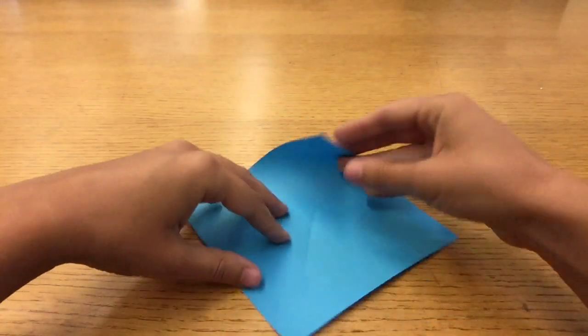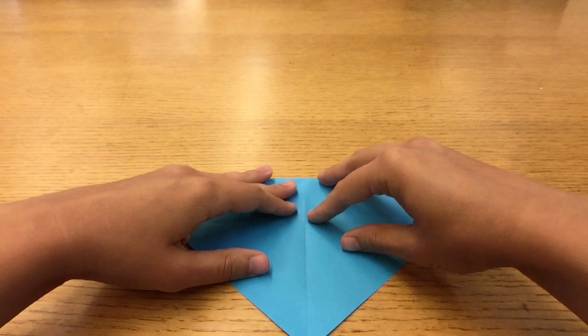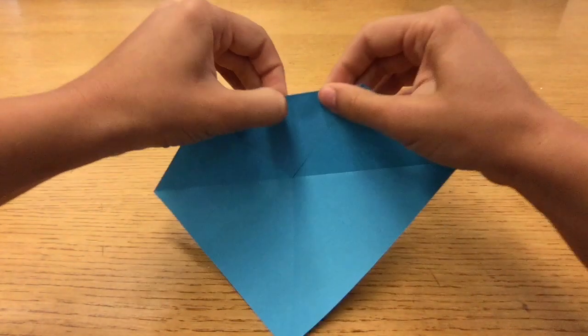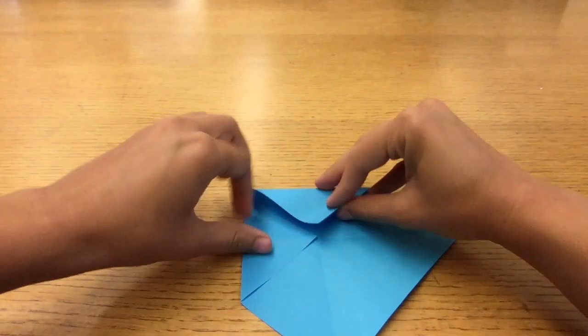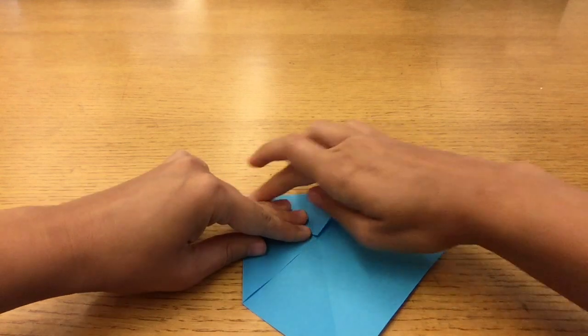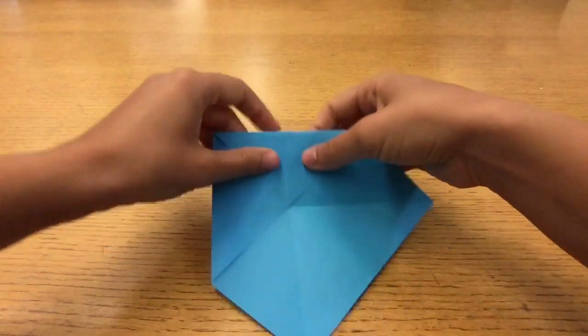Use the guidelines to find the center point and fold each corner of the square over and crease it down, touching the point to the center. As you bring each corner to the center of the square, it should line up with the edge of the triangle next to it, but not overlap.